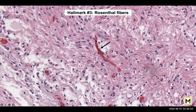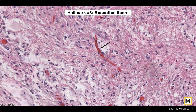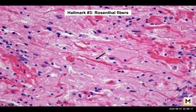This is the third hallmark — the Rosenthal fibers. They are quite unmissable. If you can locate them it's excellent, and they are quite unmissable because they are very thick, pink, eosinophilic, and they are everywhere in the tumor. There are plenty of Rosenthal fibers in this image. They look like ropes — ropey structures — and sometimes they are knotted like this. It's hard to miss Rosenthal fibers whenever they are present.